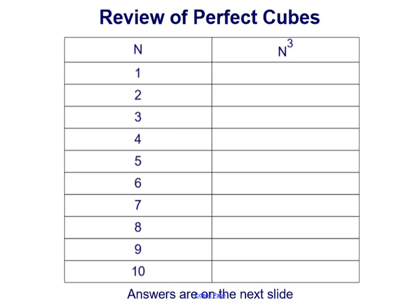So let's review more perfect cubes. Let's say we have n is our first 10 counting numbers, and then we're cubing that number. So we would have 1 cubed, 2 cubed, 3 cubed, 4 cubed, 5 cubed, and so on and so forth.